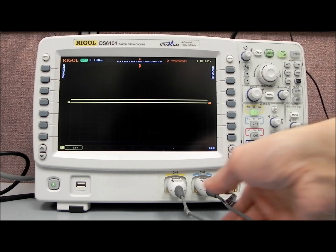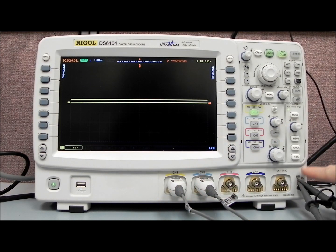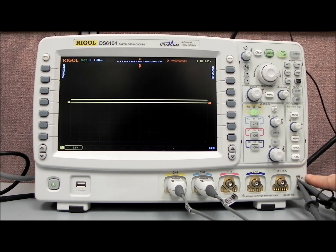In this particular demo, I've connected channel 1 and channel 2 to the probe compensation point on the right-hand side of the front panel. That's delivering a 3-volt peak-to-peak signal at 1 kHz 50% duty cycle, and it is a square wave.